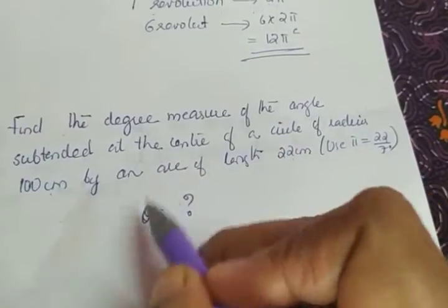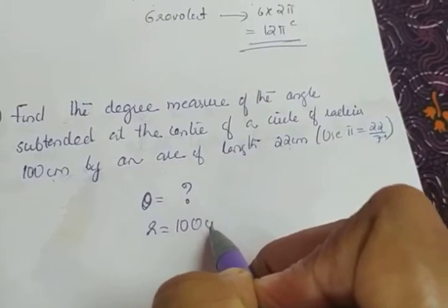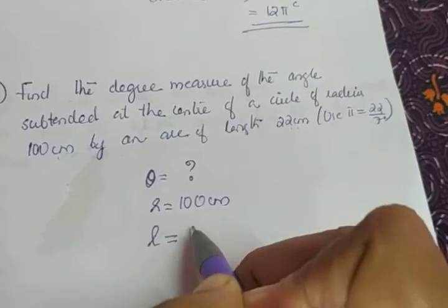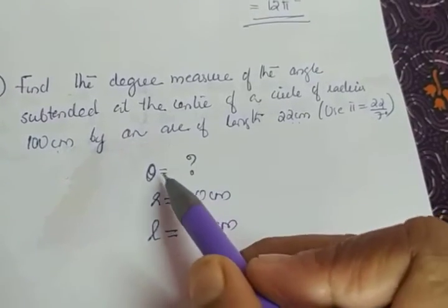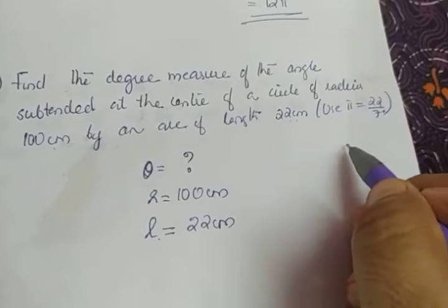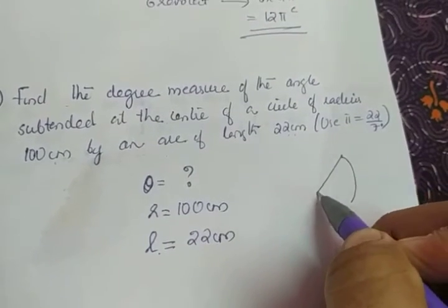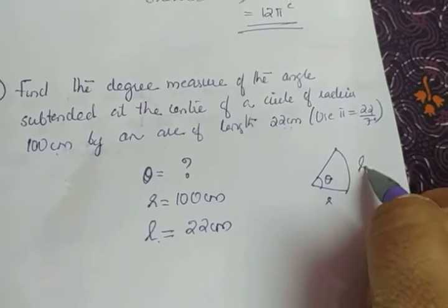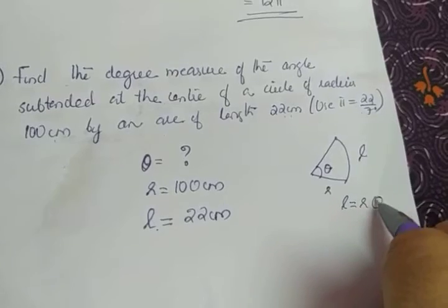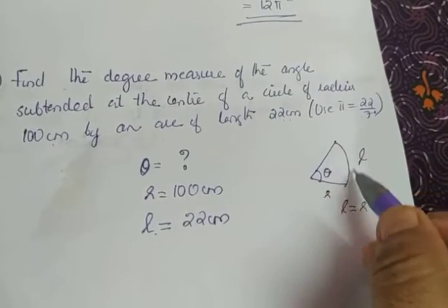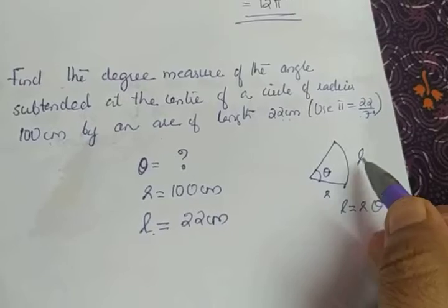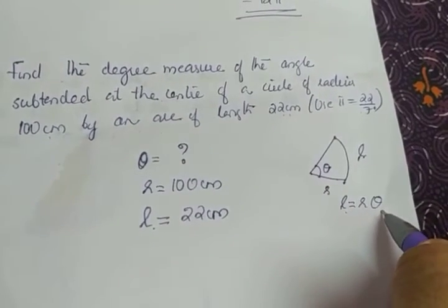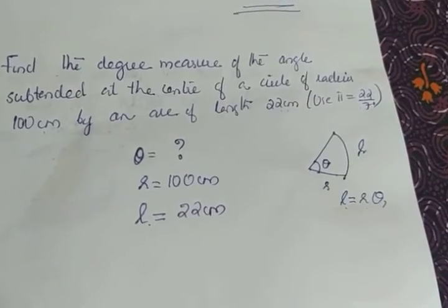The radius r is given as 100 centimeters, and the arc length l is given as 22 centimeters. We have a relation connecting theta, l, and r: if l is the arc length and the circle has radius r, then l = r × θ. This is the angle subtended by the arc of length l at a circle of radius r. The condition is that theta must be in radians.